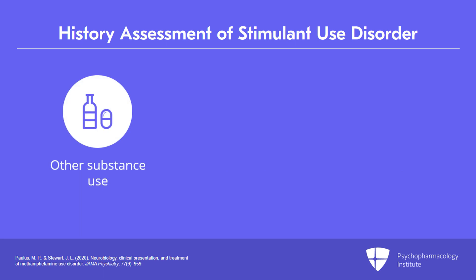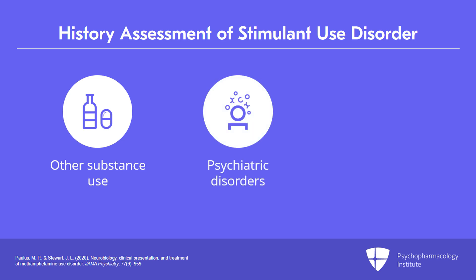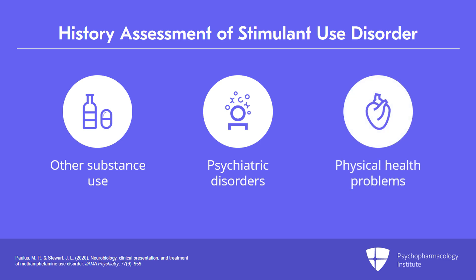Other substance use is important because very typically when people have a stimulant use disorder, they may be using other substances. Psychiatric disorders are very common to co-occur, and these can either be caused by the stimulant use or be independent psychiatric disorders. Stimulants are pretty toxic compounds when used excessively, which creates a lot of physical health problems as well.